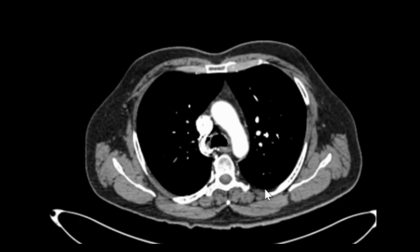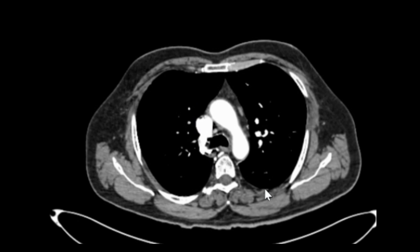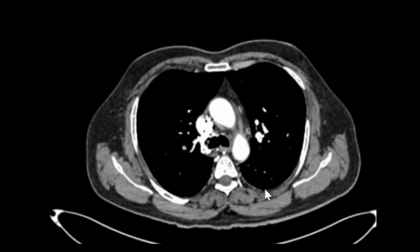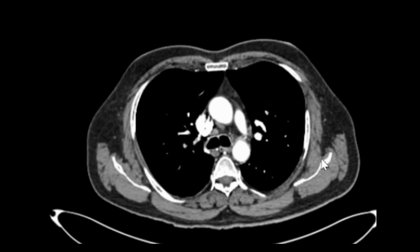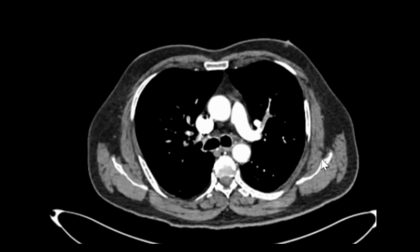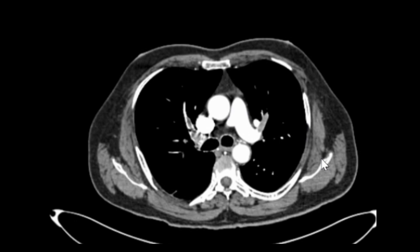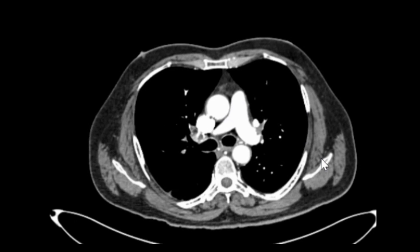As we move down, we can see the ascending aorta, descending aorta, and the pulmonary vessels start appearing.